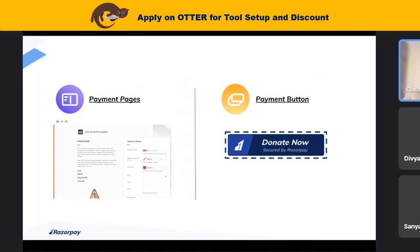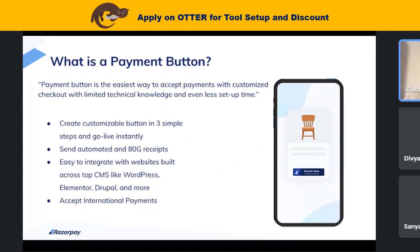Now let me quickly run through the second product — payment buttons. What is a payment button? Payment buttons are buttons inside of a website. Today if you have a website and don't want to use payment pages as a solution, you can create a customizable button to place inside your website and start accepting donations. This is enabled with ATG just like payment pages, with 100-plus payment methods. We have plugins specifically built for website builder platforms like WordPress, Elementor, and Drupal. It's a low-code solution where a code is generated and you paste it wherever you like in your website.